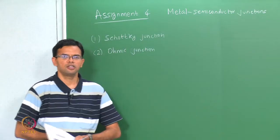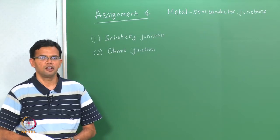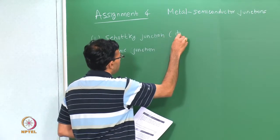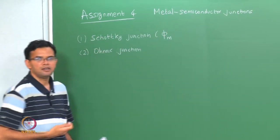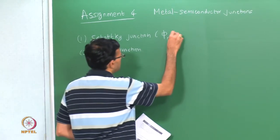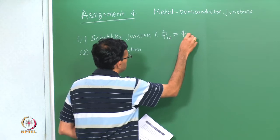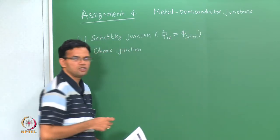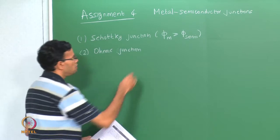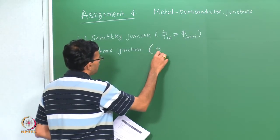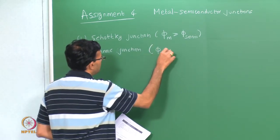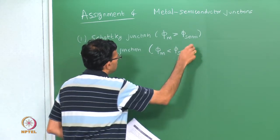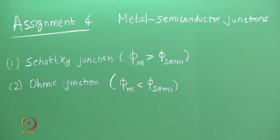A Schottky junction forms when the work function of the metal, phi_m, is greater than the work function of the semiconductor. In the case of an ohmic junction, it is the reverse — the work function of the metal is less than the work function of the semiconductor.